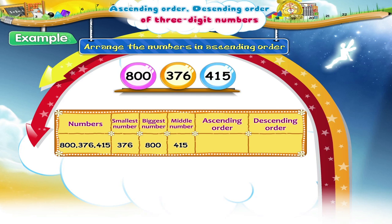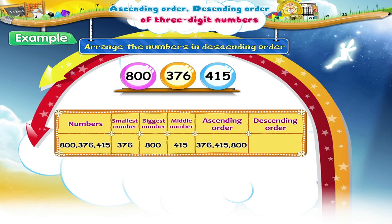So the ascending order will be 376, 415, and 800. Now, for the descending order, we will arrange the numbers starting from the biggest number. So the descending order is 800, 415, and 376.